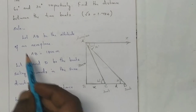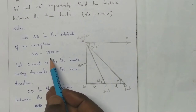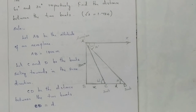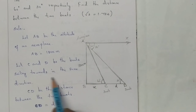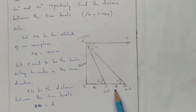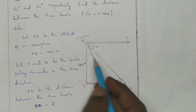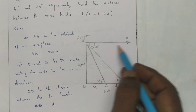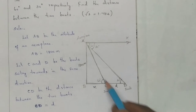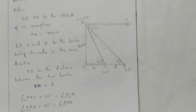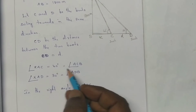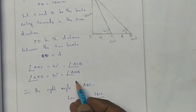Let A be the altitude of the aeroplane, so A is 1800m. Let C and D be the boats sailing towards it in the same direction. CD is the distance between the two boats. Angle XAD = 30° and angle ADB = 30°. Angle XAC = 60° and angle ACB = 60°.